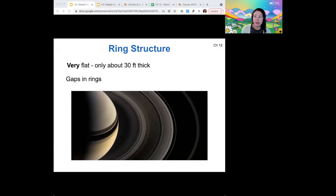All right, the rings in general are really flat compared to their diameter. They're only about 30 feet thick, so that's only a few stories of a building tall compared to an enormous planet. The other thing that we of course notice about the ring structure is these gaps. So I want to talk about these gaps a little bit more.